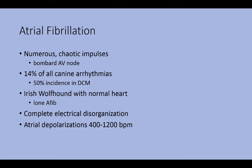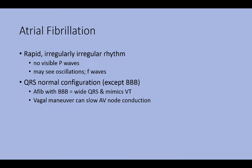Atrial fibrillation is usually complete electrical disorganization, with atrial depolarizations occurring at 400 to even 1200 beats per minute. Those beats cannot all go through the AV node to the ventricle, or there would be no time for ventricular filling. With atrial fibrillation, we have a rapid, irregularly irregular rhythm, no visible P waves — sometimes we see oscillations or F waves — and the QRS configuration is usually normal. The exception again is bundle branch block.